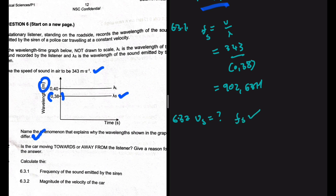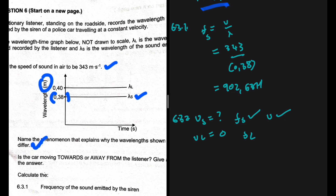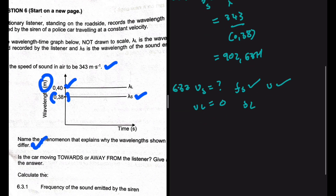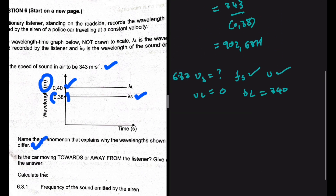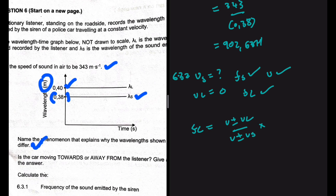We have the frequency of the sound source already calculated, and the speed of sound in air is given as 343 m/s. The listener is stationary, so v_L equals zero. We can calculate the frequency observed by the listener from the given wavelength. With these variables, the Doppler equation is: f_L equals v plus or minus v_L, divided by v plus or minus v_S, multiplied by f_S.